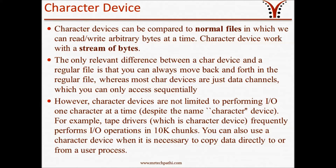Coming to our first device — character devices. A character device can be compared to a normal file in which we can read or write arbitrary bytes at a time. Character devices work with a stream of bytes. The only relevant difference between a character device and a regular file is that you can always move back and forth in a regular file, whereas most character devices are just data channels which you can only access sequentially. However, character devices are not limited to performing input/output one character at a time. For example, tape drivers frequently perform input operations in 10K chunks. You can also use a character device when it is necessary to copy data directly to or from a user process.